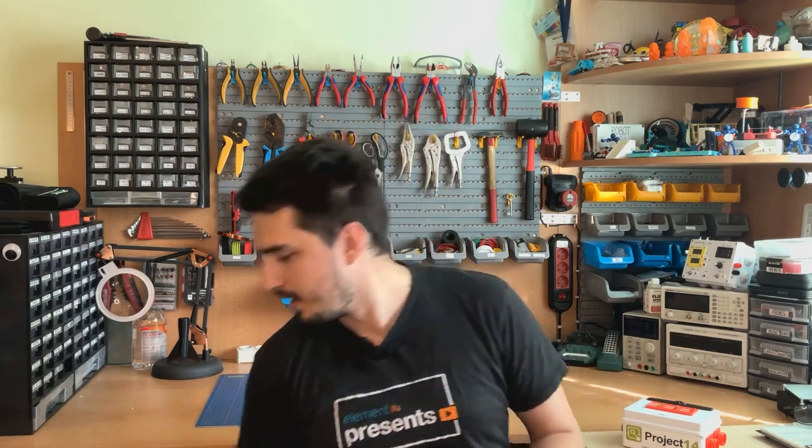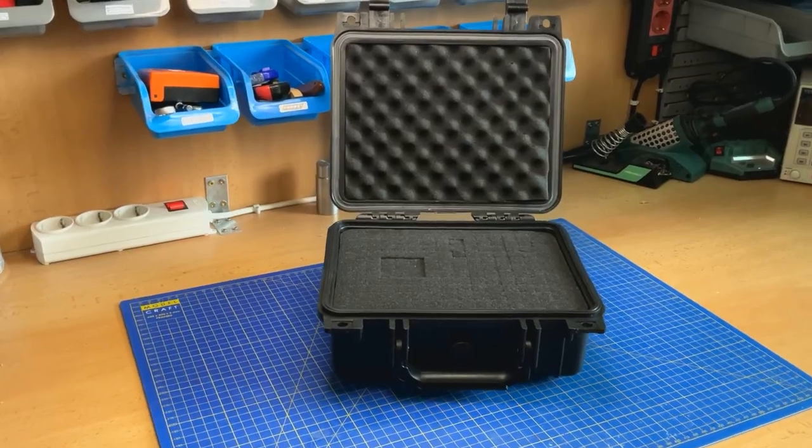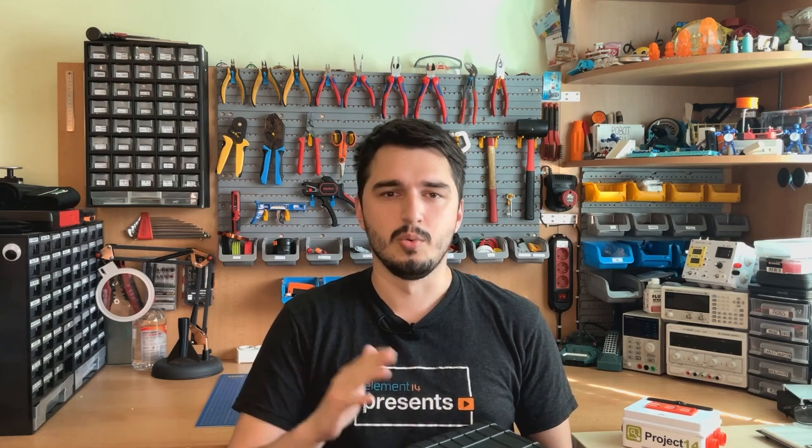So with that part of the project done, there's another thing left, and that's to make the terminal that you saw in the drawing in the beginning. So this is the case I will be using for it. So let's get to the panel that will be inside this case and see all of the things that we need, like the switches, LEDs, the LCD, and so on.